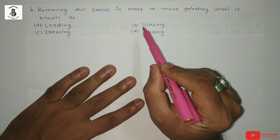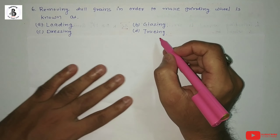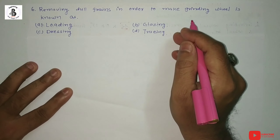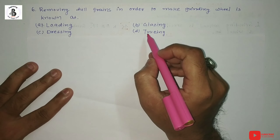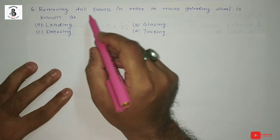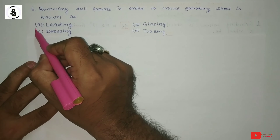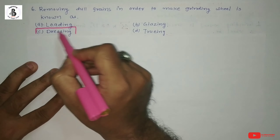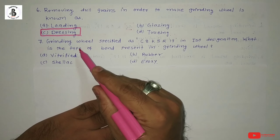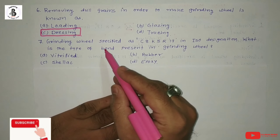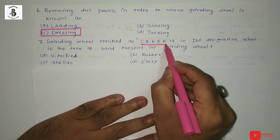Question 6: Removing dull grains in order to restore the cutting action of a grinding wheel is known as: Option A: dressing. Truing is used to restore the lost shape, but removing dull grains to restore the grinding wheel's performance is known as dressing — option C: dressing.